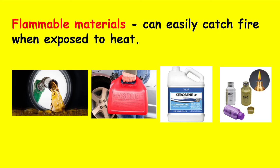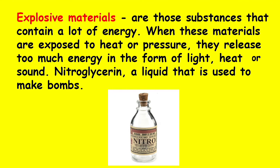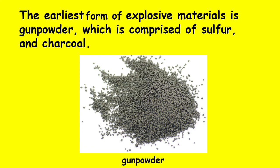Flammable materials can easily catch fire when exposed to heat. Liquids that are commonly used as fuel — gasoline, kerosene, and lamp alcohol — are highly flammable. Explosive materials are those substances that contain a lot of energy. When these materials are exposed to heat or pressure, they release too much energy in the form of light, heat, or sound. Nitroglycerin, a liquid that is used to make bombs, is one example of an explosive material. The earliest form of explosive materials is gunpowder, which is comprised of sulfur and charcoal.